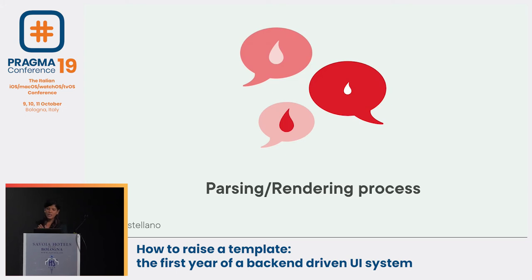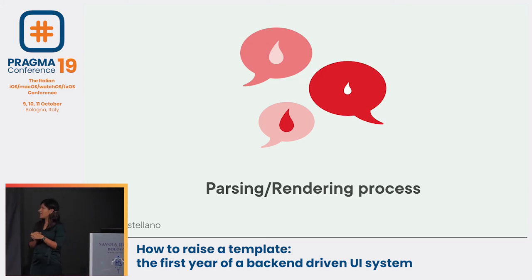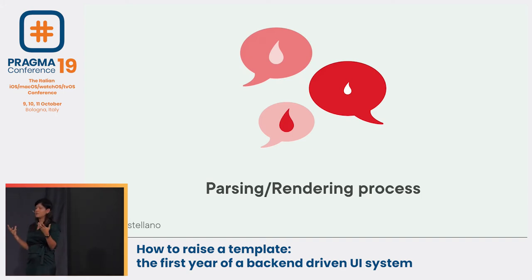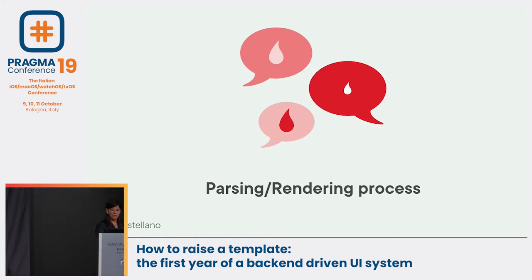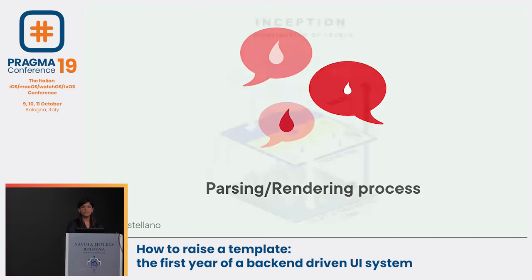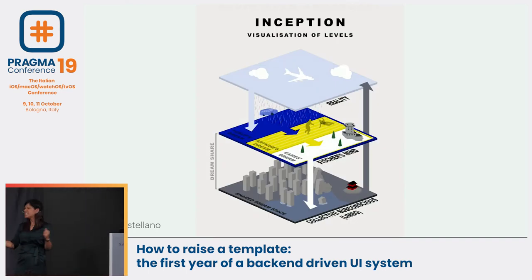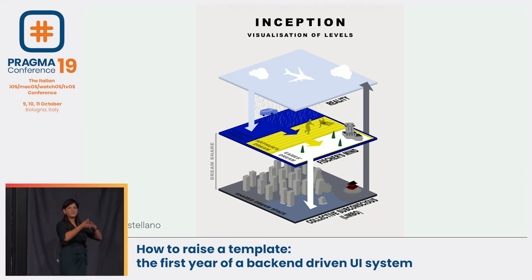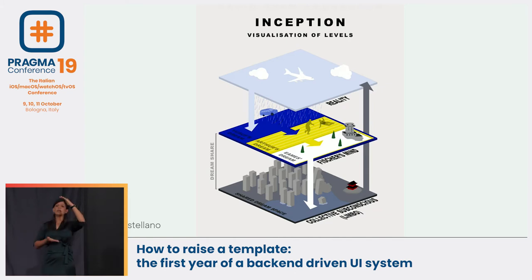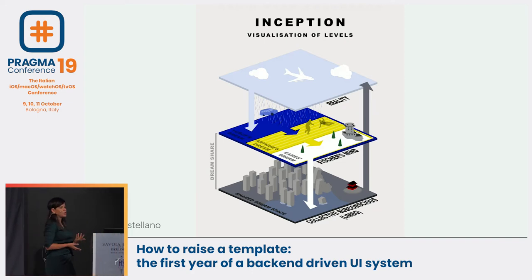Let's look at our parsing and rendering process. To explain this I'll use a visual reference from one of my favorite movies — Inception. As in Inception, we have several layers. Leonardo DiCaprio started in reality, went through several dreams, and ended up in the limbo. This is the best way I can explain our parsing process. Let's start on the airplane — in reality.